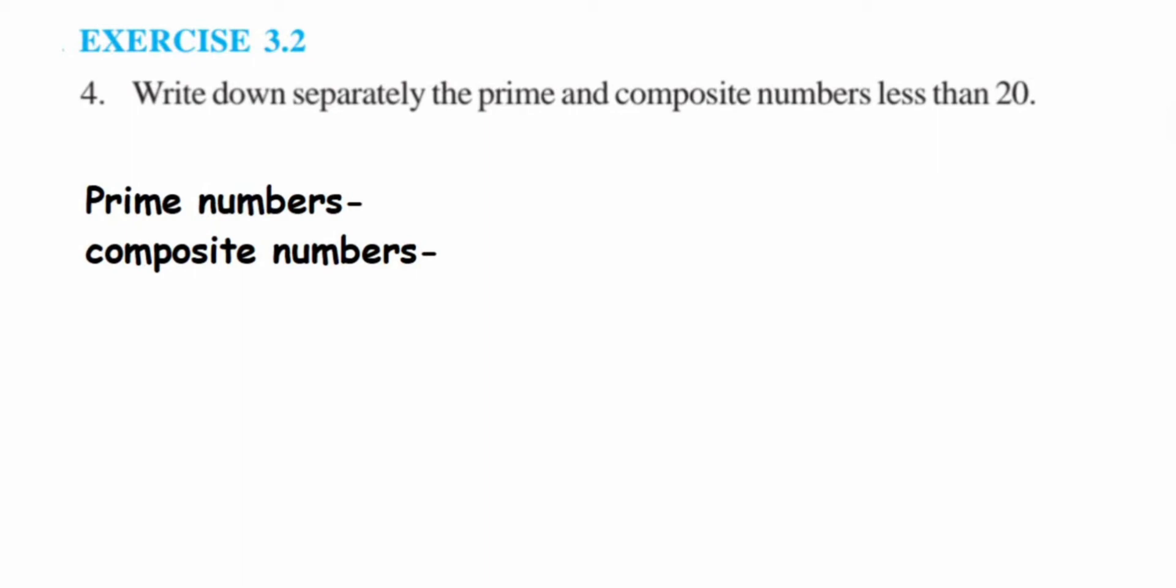Hey everyone, here's one more question, the fourth question of Exercise 3.2, Playing with Numbers, class 10. The question is very simple. Let's read it: Write down separately the prime and composite numbers less than 20. So which numbers are prime and which are composite? We have to separate them.